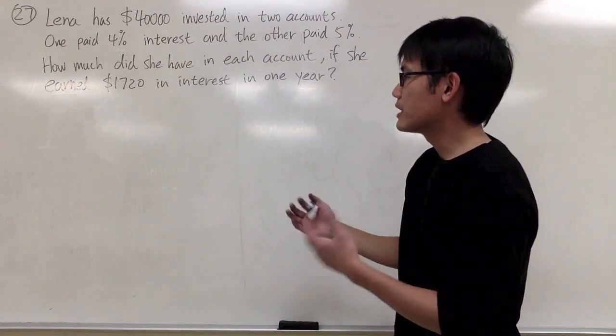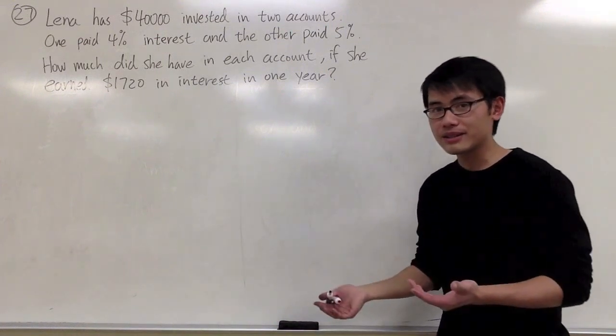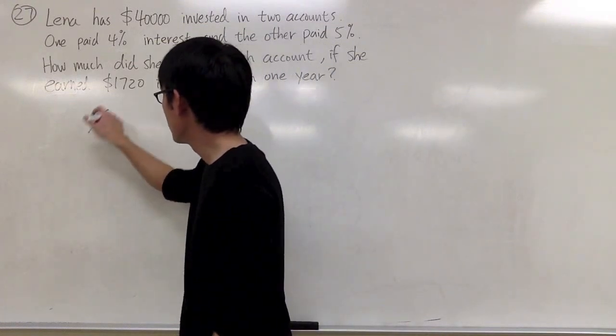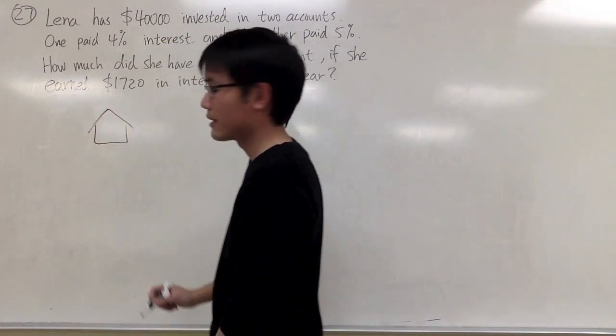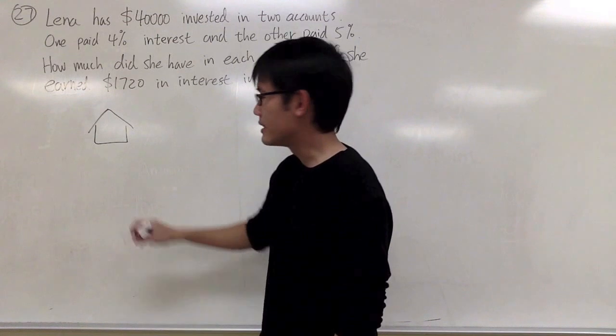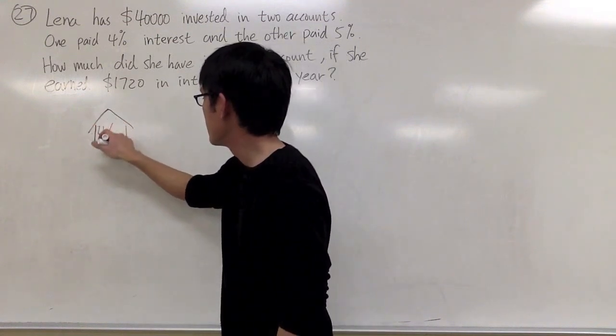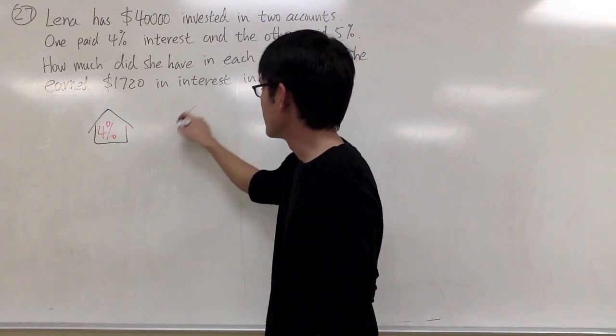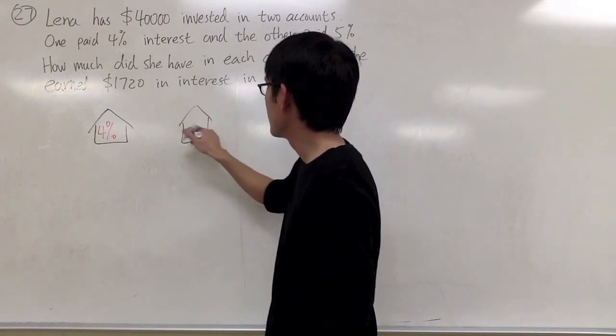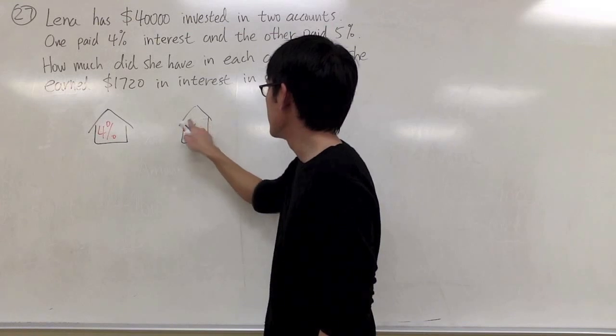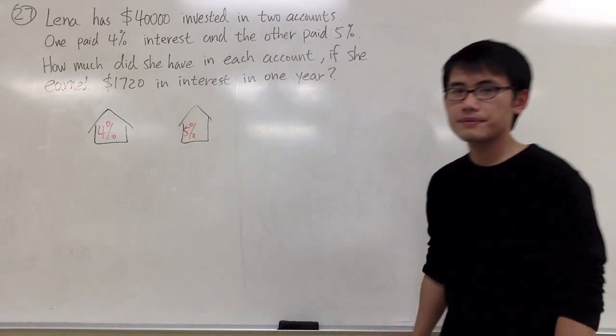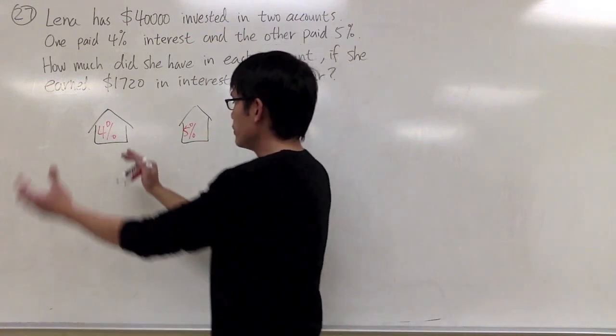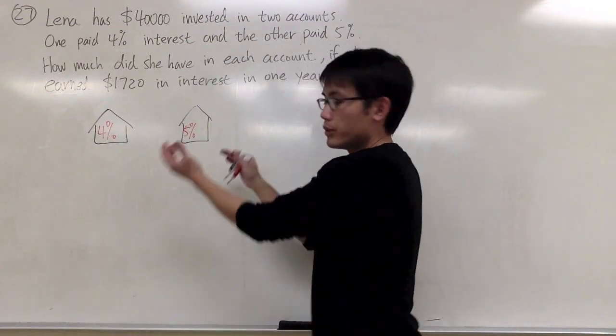Because we're talking about accounts, we can relate that to banks, so let me draw some pictures to illustrate this question. Here's my first bank that pays us 4% interest rate. And we also have the second account, second bank, which pays us 5% interest rate. So the question is, how much money do we put in here, and how much money do we put in here?